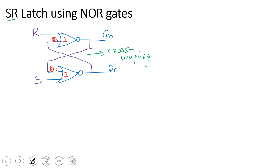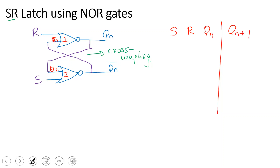Now let's use the truth table. Gate 1 input is R and QN bar; gate 2 input is S and QN. In the truth table, QN bar is the complement of QN — so if QN is 0, QN bar is automatically 1. The output is QN plus 1, where QN is the present state and QN+1 represents the next state.